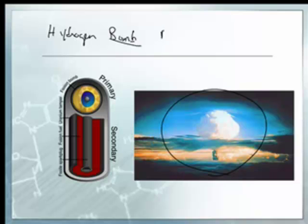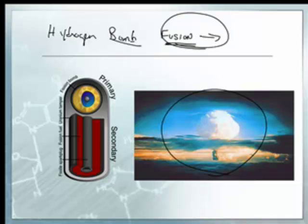In a hydrogen bomb, they use nuclear fusion. Nuclear fusion has a lot, lot, lot more energy than nuclear fission. Remember that 14 million times figure? It's much worse than that. Fission is probably only a million — fusion is about 14 times stronger.